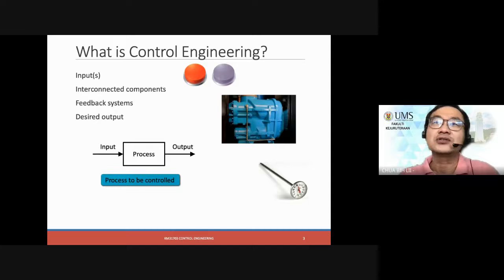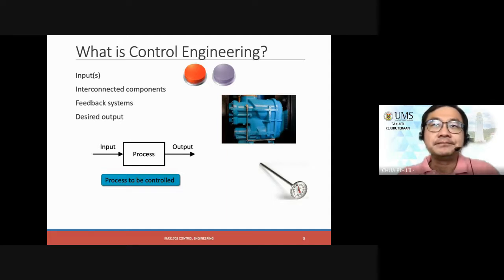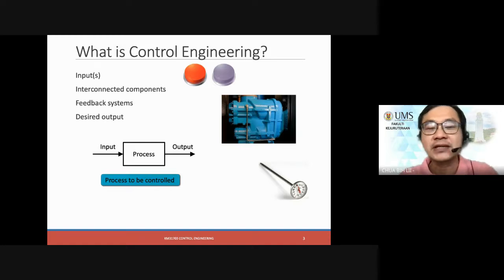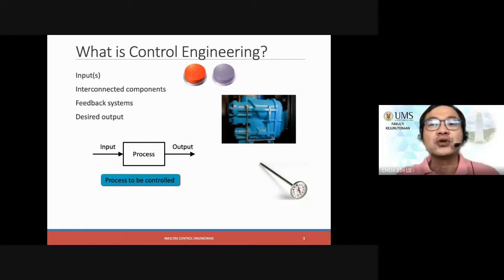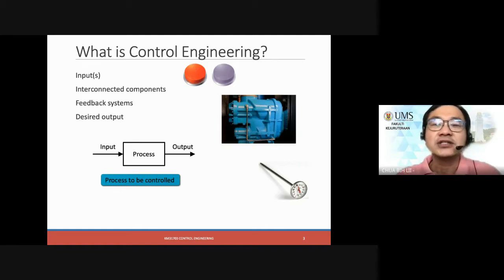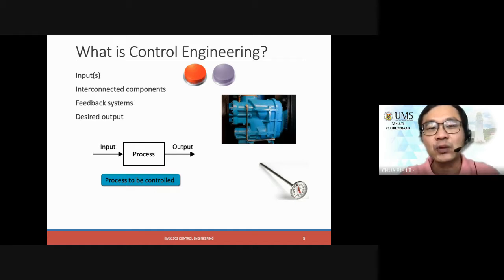This is important such that whenever we communicate, especially when doing a certain design, the design itself may not only depend on one engineer — for example, a mechanical engineer. As we know, Industrial Revolution 4.0 involves not only the mechanical part, but also the electrical, electronics, and the software part. So they are integrated into one single product, and due to that, we need some knowledge of all this to easily communicate between mechanical and electrical engineers.